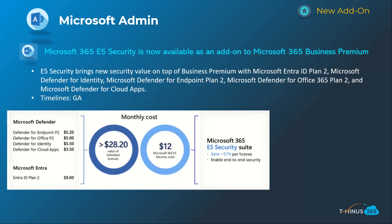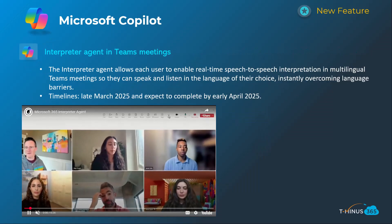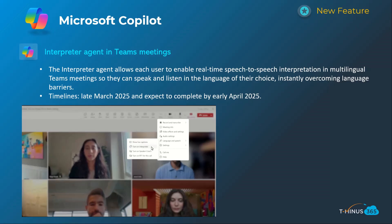Next is a really exciting announcement: Microsoft 365 E5 Security is now available as an add-on for Business Premium. As you can see in the screenshot, it's over 57% reduction in cost compared to purchasing these individual security features or add-ons separately. It's about $12 additional, but if you get into a conversation about TCO or security functionality that could improve the health of the business, it's a great conversation to have. This is GA today, so you can start to bolt that on to existing customers with Business Premium.